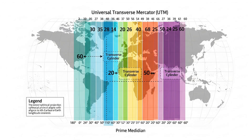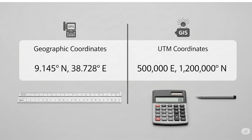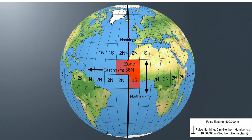Why is UTM so popular in GIS and surveying? Because it offers high accuracy for mapping small to medium areas. Unlike geographic coordinates in degrees, UTM uses meters, making it perfect for distance and area calculations. In fact, most GPS devices and GIS software default to UTM when working in smaller regions, because it's easier to work with than decimal degrees.